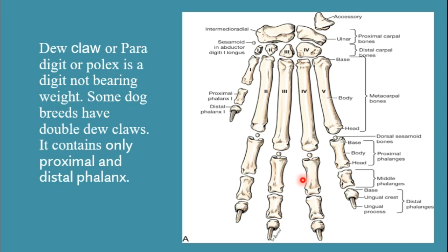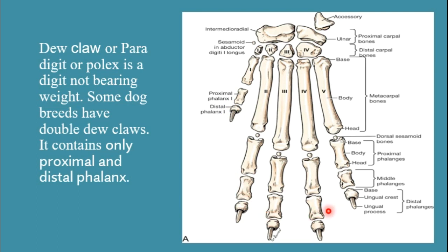These digits are named according to their numbering and their numbering starts from the medial aspect towards the lateral aspect. So we have first digit, second digit, third digit, fourth digit, and fifth digit. First digit is present medially and fifth digit is present at the lateral aspect. Each digit further contains 3 phalanges, while in case of the first digit there are only 2 phalanges. The first digit is also known as dewclaw and it is the only non-weight-bearing digit, while the other 4 digits are weight-bearing.